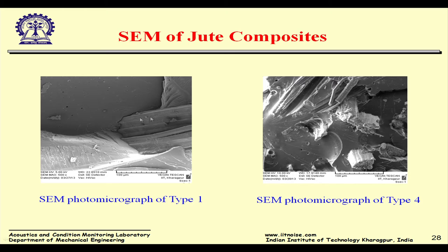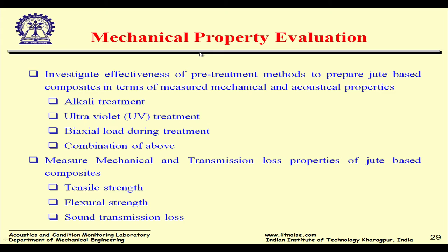SEM images show that with one treatment (Type 1), there is a visible gap between fiber and matrix, indicating poor bonding. After all treatments (Type 4), no gap is visible between fiber and matrix — showing good bonding. These images confirm Type 4 forms a good composite with strong fiber-matrix bonding, which also reflects in improved mechanical properties and sound transmission class (STC) values.